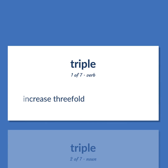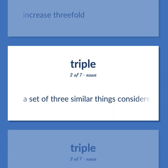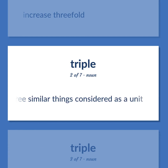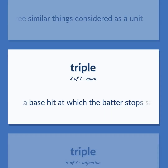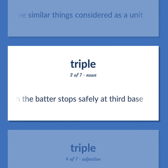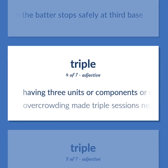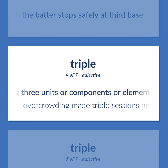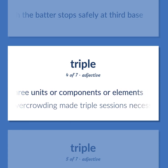Triple: Increase threefold. A set of three similar things considered as a unit. A base hit at which the batter stops safely at third base. Having three units or components or elements. Example: Overcrowding made triple sessions necessary.